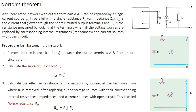According to Norton's theorem, any linear active network with output terminals A and B can be replaced by a single current source Isc in parallel with a single resistance Rn — or in the case of an AC network, an impedance Zn. Isc is the current that flows through the short-circuited output terminals, and Rn is the resistance measured by looking at the terminals when all voltage sources are replaced by their internal resistances and current sources with open circuit.